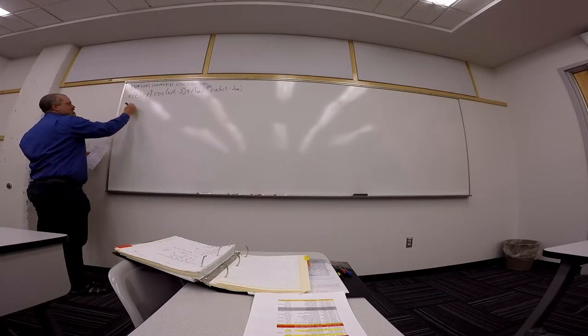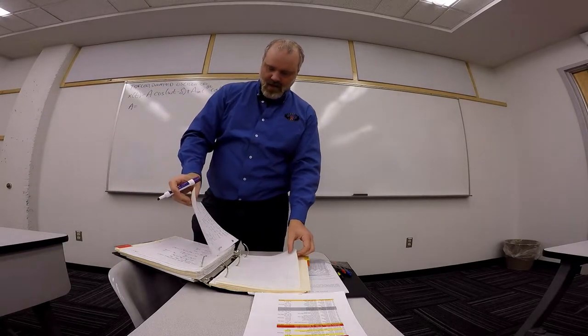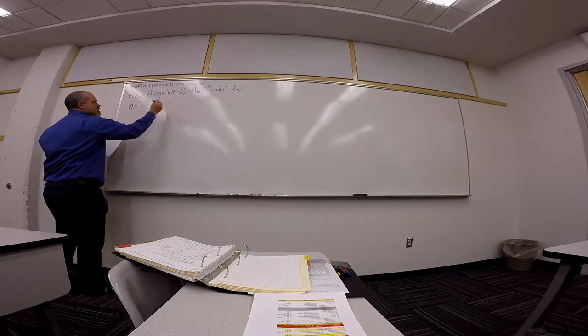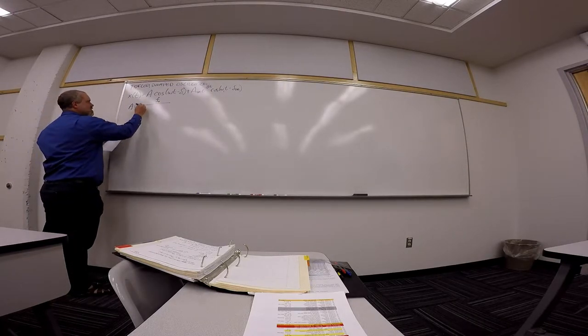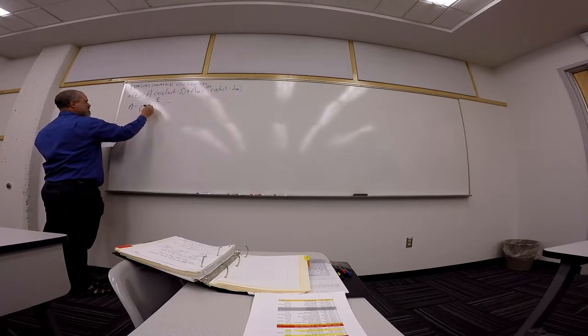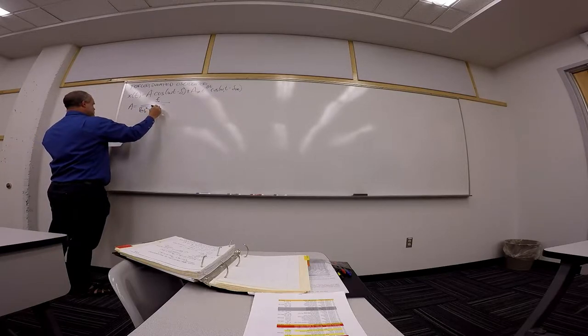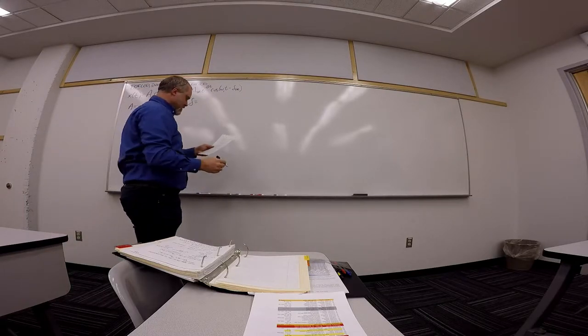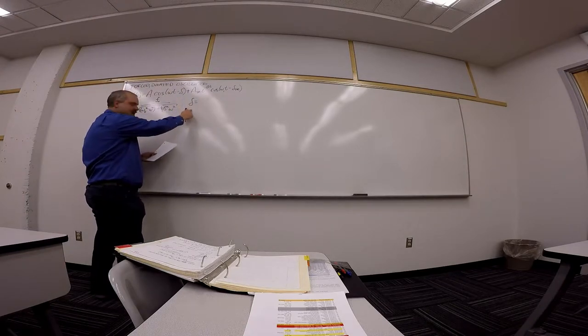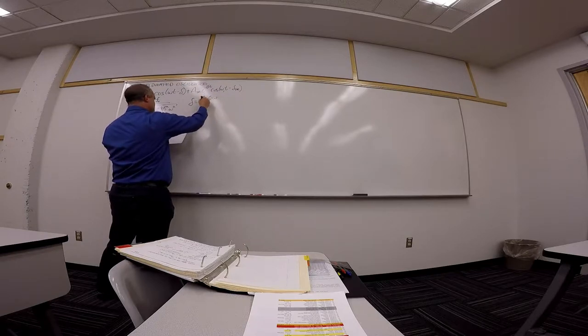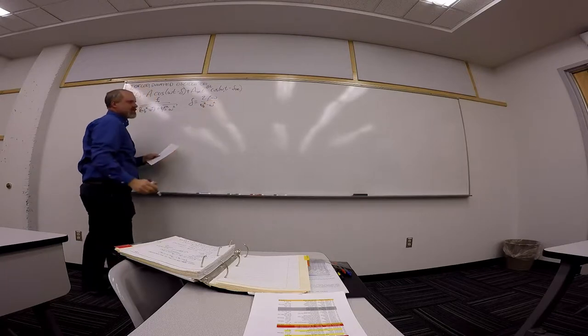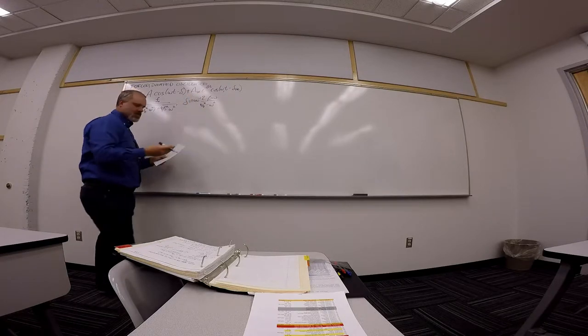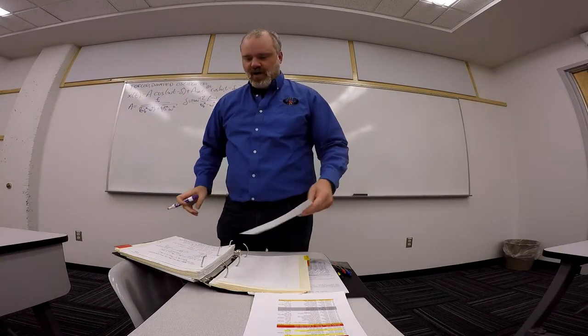And I showed you guys this morning that that amplitude, the long-term amplitude, is equal to forcing amplitude divided by square root omega naught squared minus omega squared plus 4 beta squared omega squared. And that the forcing phase is 2 beta omega over omega naught squared minus omega squared, inverse tangent.